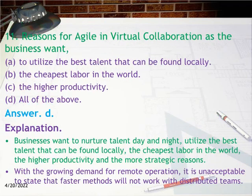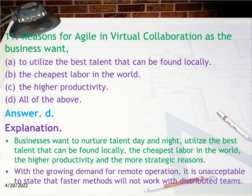Question 11: Reasons for agile in virtual collaboration — as the business wants to utilize the best talent that can be found locally, the cheapest labor in the world. Answer: D. All of the above. Explanation: Businesses want to nurture talent day and night, utilize the best talent locally, access the cheapest labor in the world, achieve higher productivity, and pursue more strategic reasons. With the growing demand for remote operation, it is unacceptable to state that faster methods will not work with distributed teams.